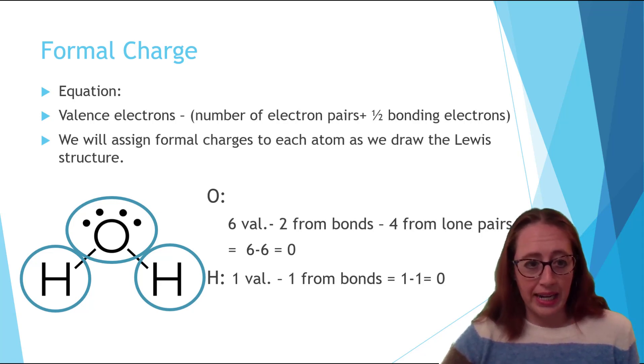Let's walk through water right now. For oxygen it has six valence electrons. In this molecule you see that it has two sets of lone pairs which gives it four electrons and it also has two bonds and so it gets one from each bond. That gives it six minus six is zero.